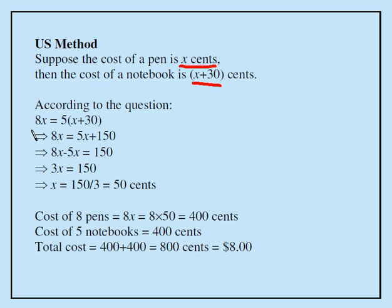We know the cost of eight pens is same as the cost of five notebooks. Note here, 8x is the cost of eight pens. And five times x plus 30 is the cost of five notebooks. They must be equal because that's what the question says. All we need to do now is solve this equation, which doesn't look terribly bad. It's a pretty simple equation.